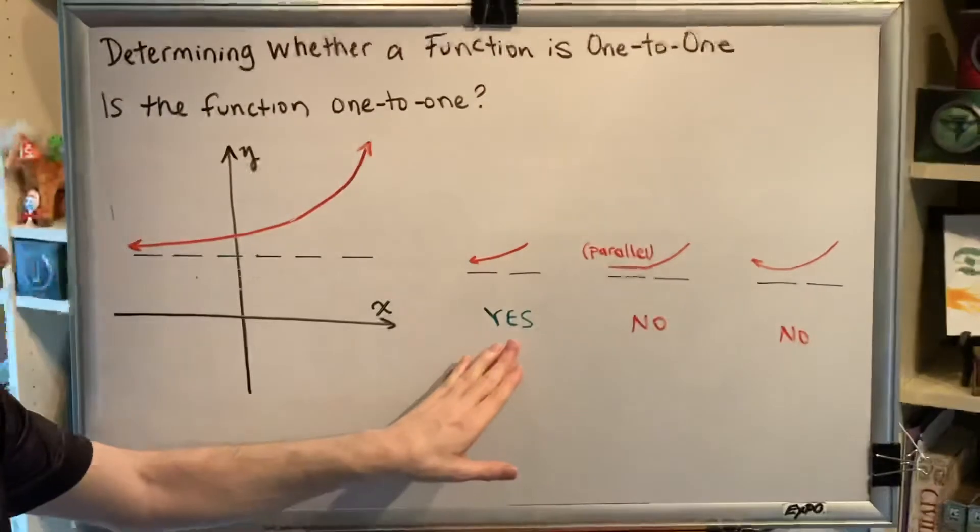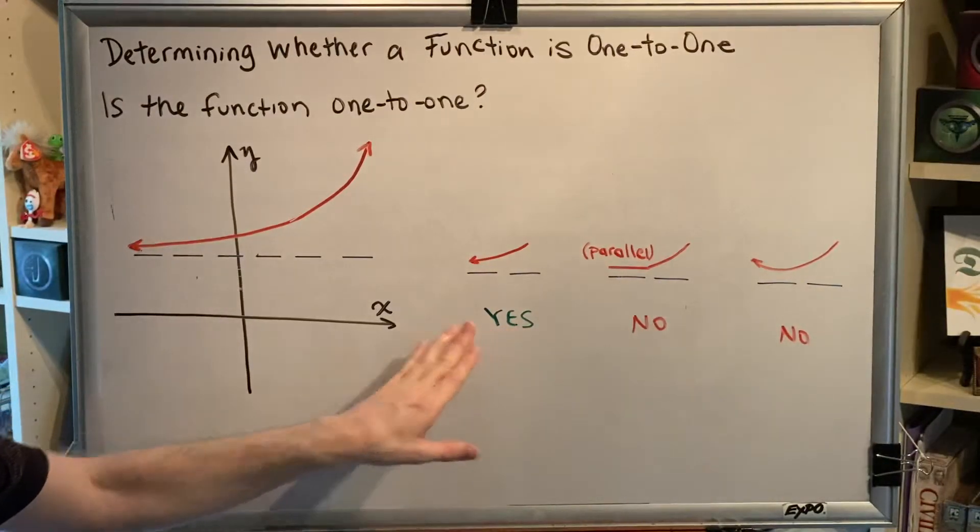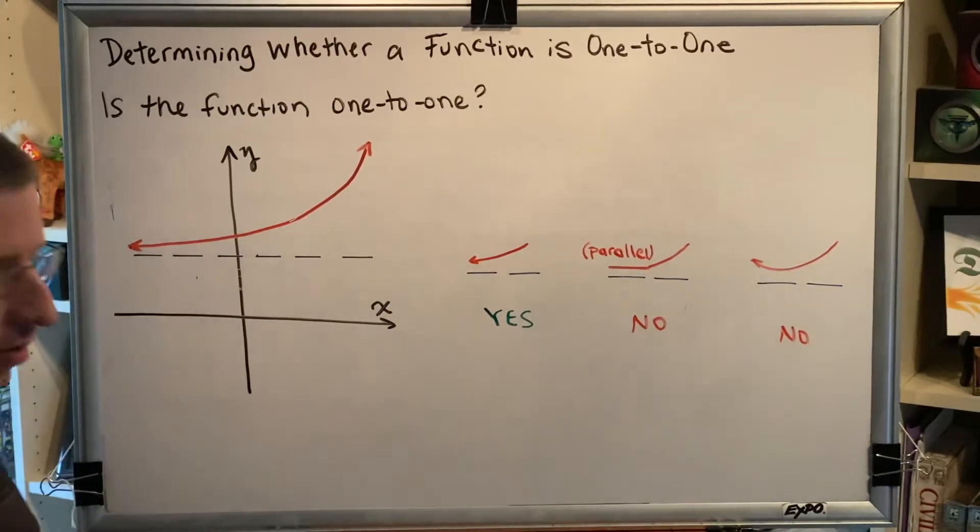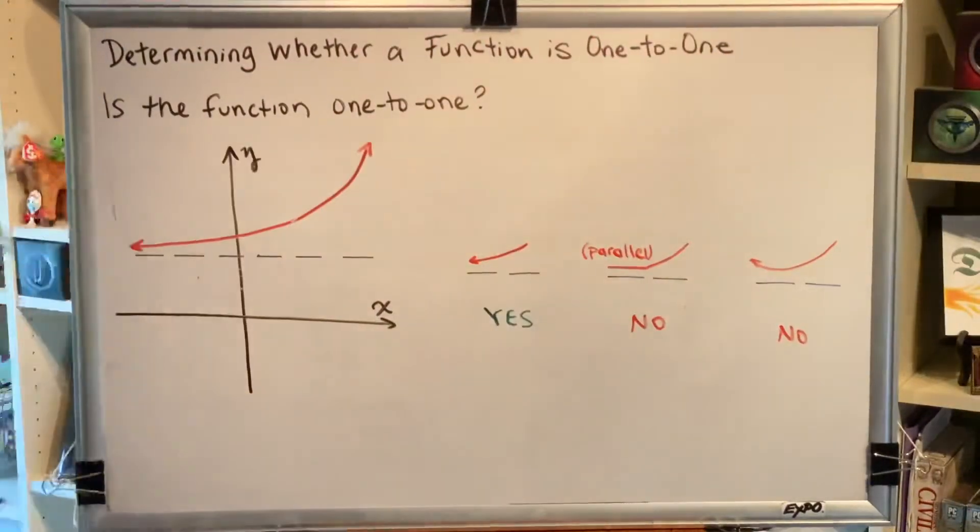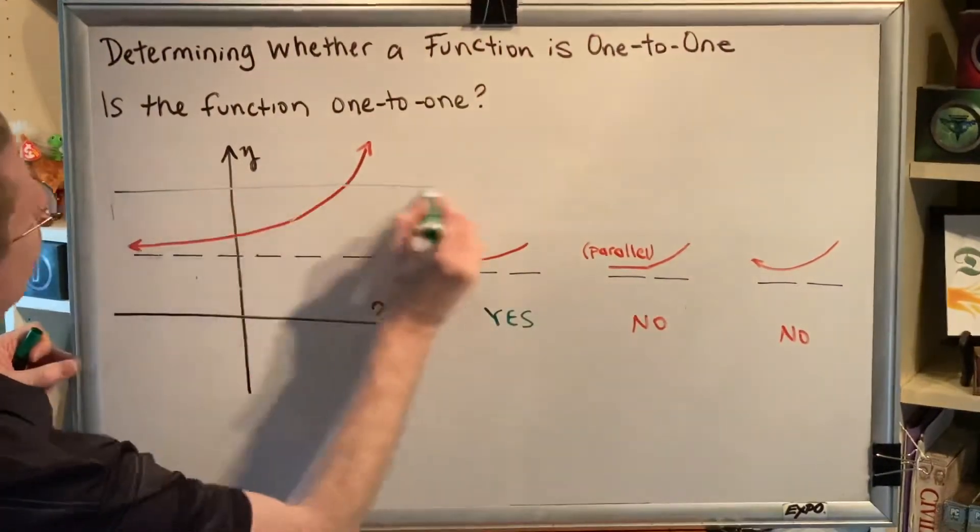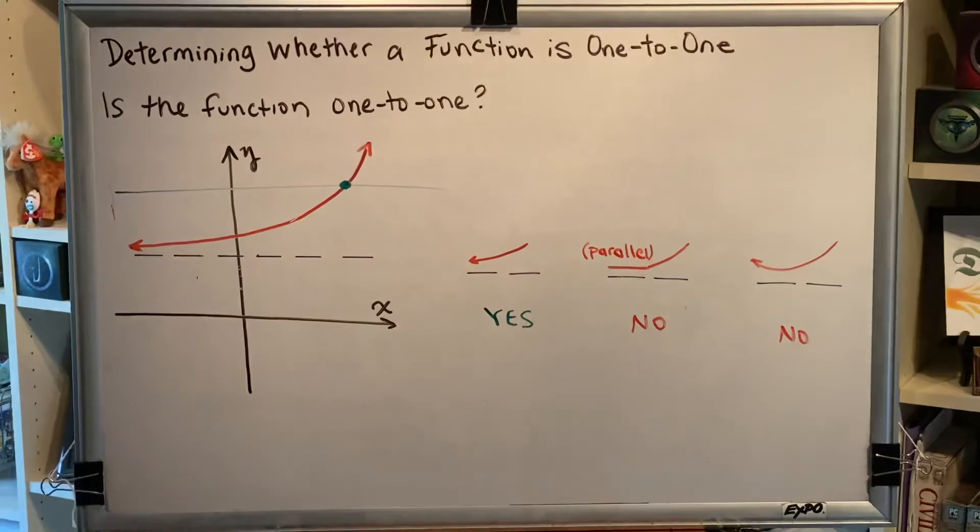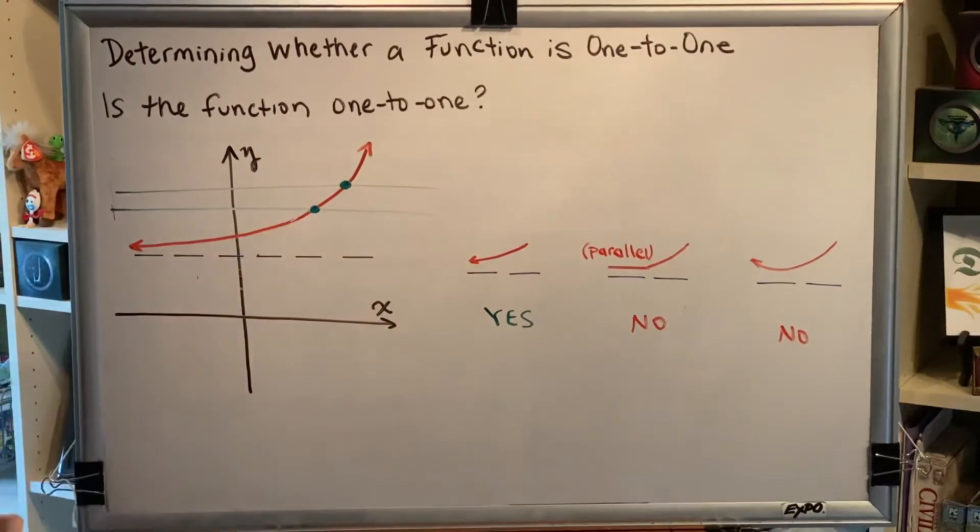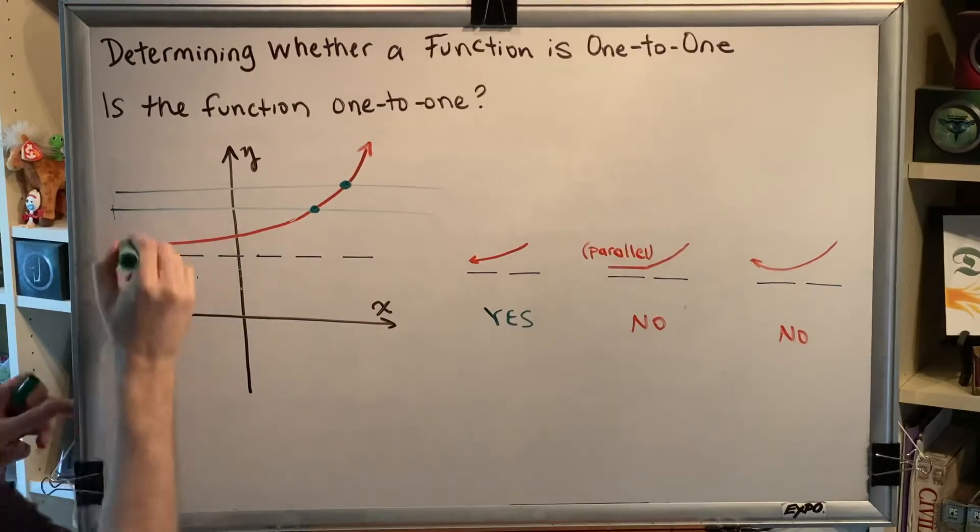Okay, is this a one-to-one function? Let's apply the horizontal line test. So can I draw a horizontal line that will intersect this red curve at more than one point on that line? The answer is no.